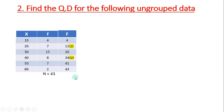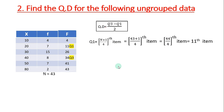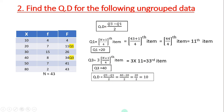Now we calculate Q1 and Q3 using the formula QD = (Q3 minus Q1) / 2. Q1 is the (n+1)/4 th item: (43+1)/4 = 44/4 = 11th item. Looking at cumulative frequency, the 11th item falls in score 20, so Q1 = 20. Q3 is 3 times (n+1)/4 = 3 into 11 = 33rd item. In cumulative frequency, 33 lies within 34, so Q3 = 40. Substituting: QD = (40 minus 20) / 2 = 10.